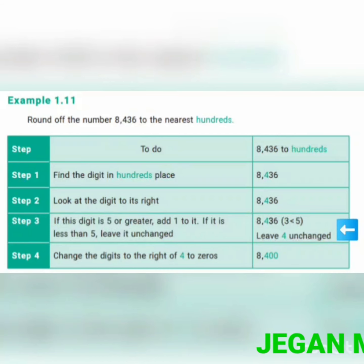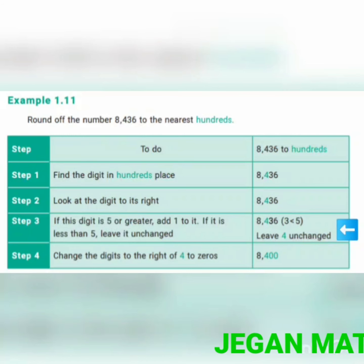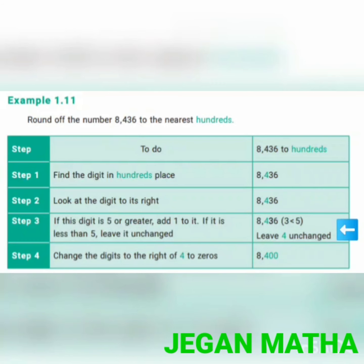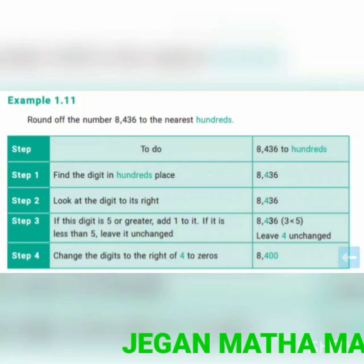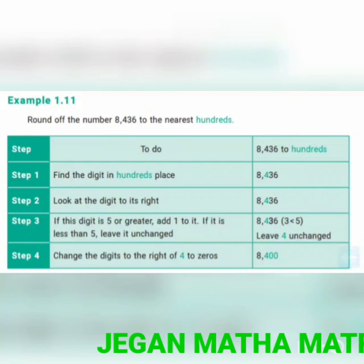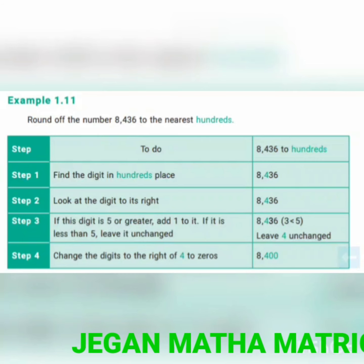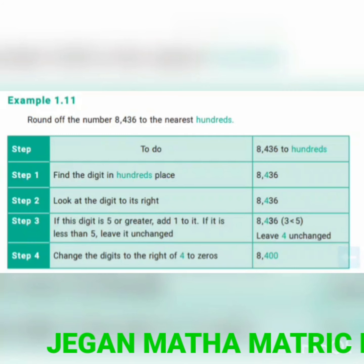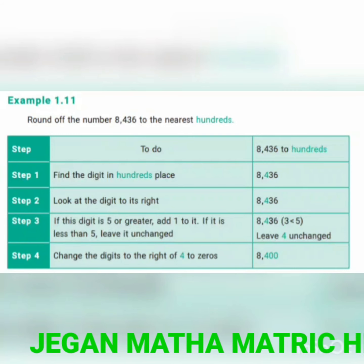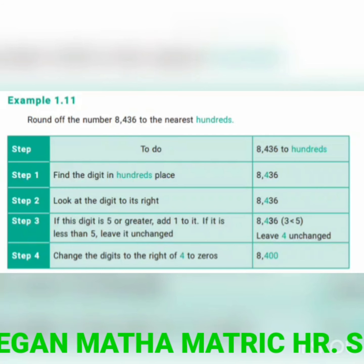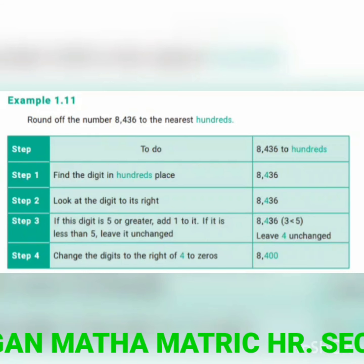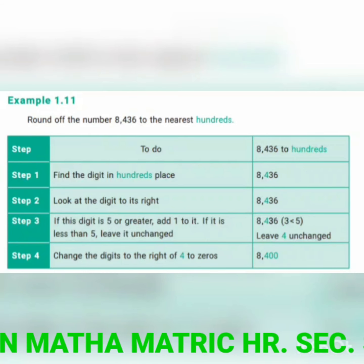In 8,436, the hundreds place is 4. The digit in the tens place to the right is 3, and 3 is less than 5, so you leave 4 as it is. Step four: change the digits to the right of the hundreds place to zeros. The thousands place and hundreds place stay as they are; the tens and ones become zero.